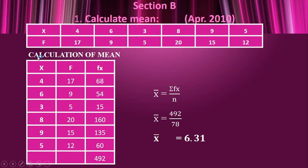Another question — these are problems for practice. x values are there, frequency is there, fx is found, total of fx is found, and total of frequency is 78. Substituting in the formula: x̄ = σfx = 492, divided by n = 78. So x̄ is 6.31.